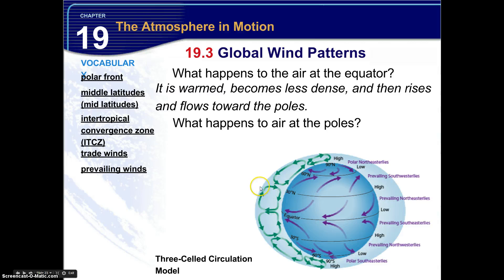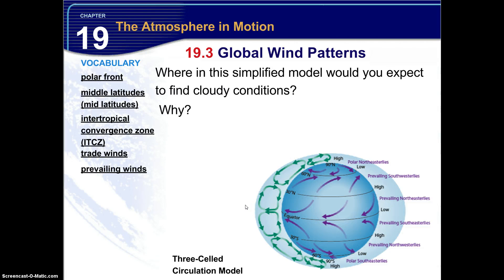How about air at the poles? It cools, becomes dense, and then sinks, and flows towards the equator. Where in this simplified model would you expect to find cloudy conditions, and why? Think back on how clouds form, what has to happen for clouds to form.